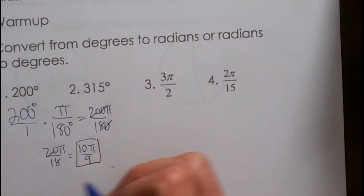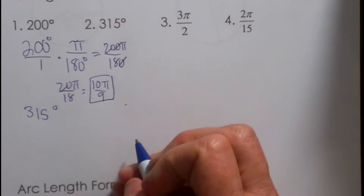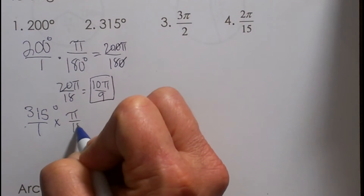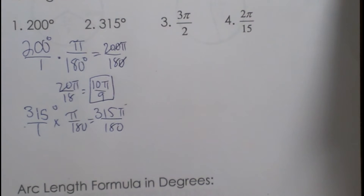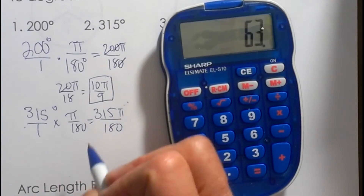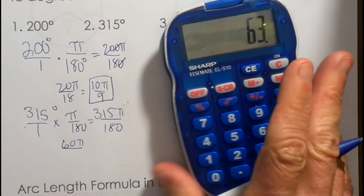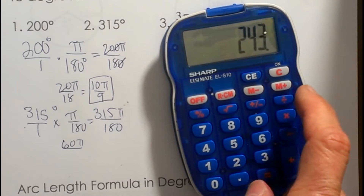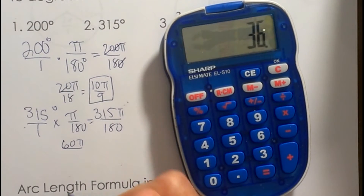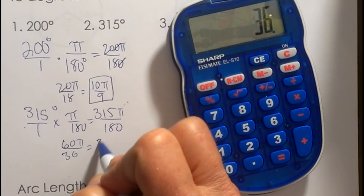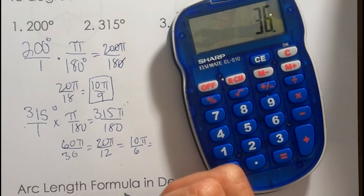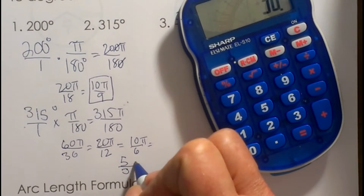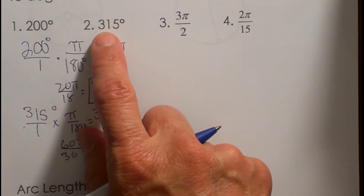315 degrees — we would do the same thing. 315 degrees over 1, and we are going to convert it by multiplying by pi over 180. That gives us 315 pi over 180. 315 is divisible by 5: 315 divided by 5 is 63, and 180 divided by 5 is 36. That reduces by 3, giving us 21 pi over 12, which reduces by 3 again to give us 7 pi over 4 — so 7 pi fourths is the same as 315 degrees.